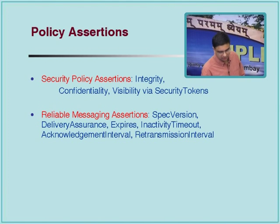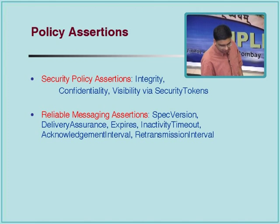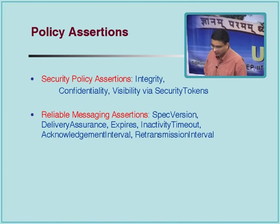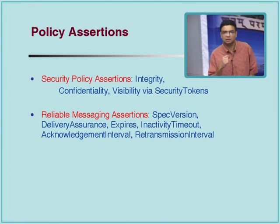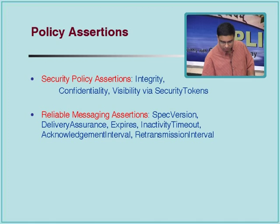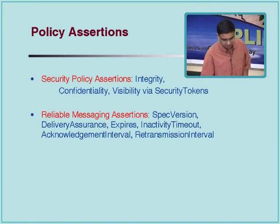There are certain standard things defined upfront. If you are talking about policy assertions having to do with reliable messaging, then it is things like delivery assurance — at most once delivery semantics, at least once, and so on — whether the message expires at a certain point in time. For example, retransmission interval means that if I don't get an acknowledgement back, after how long should I wait and then retransmit that particular message.